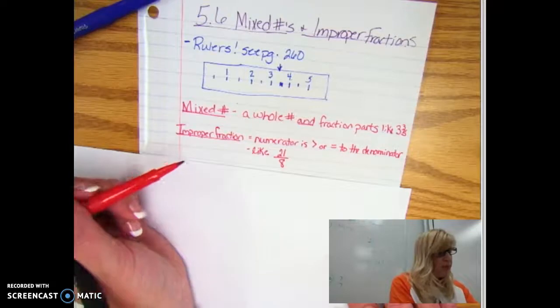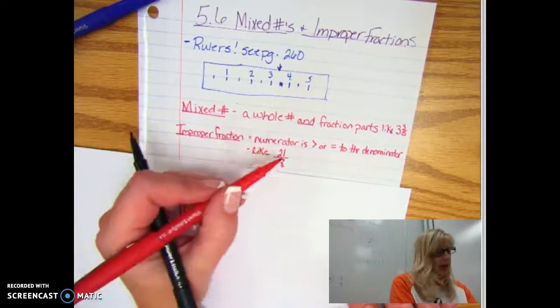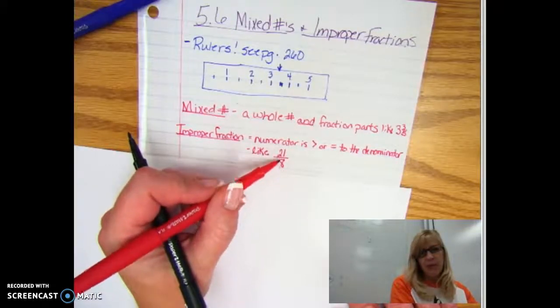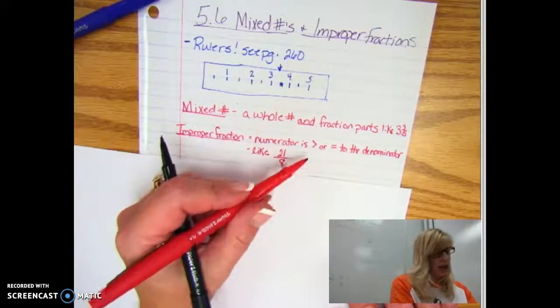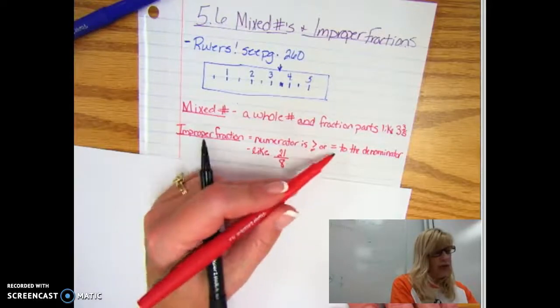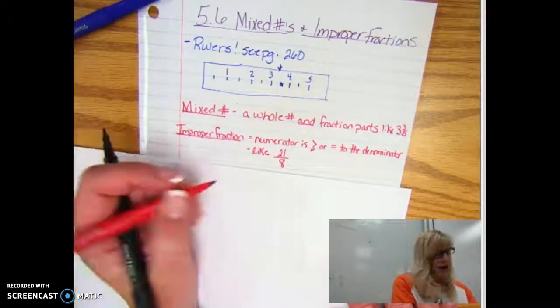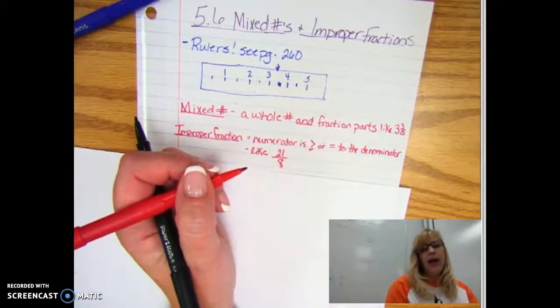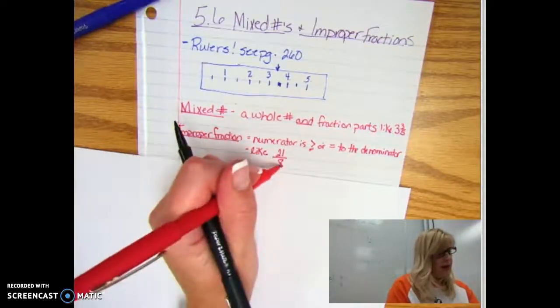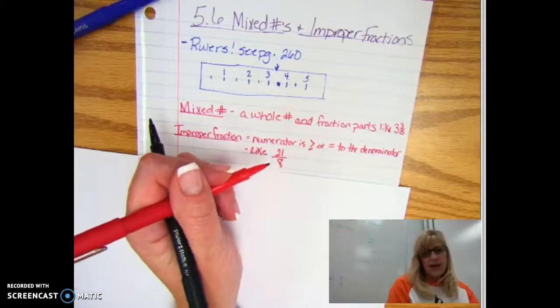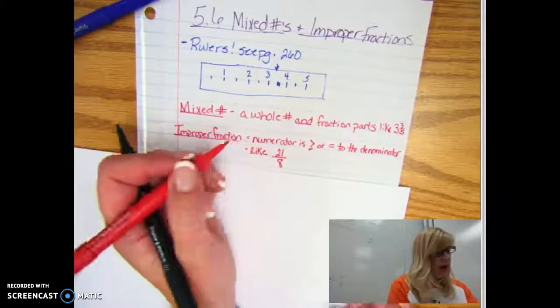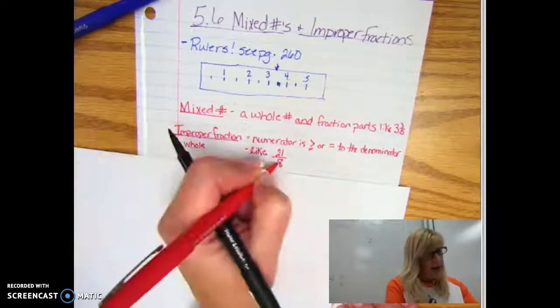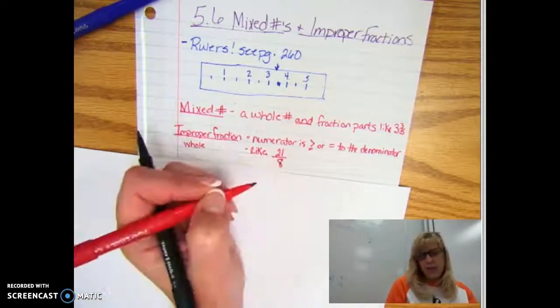An improper fraction is a fraction where the top number is bigger than the bottom number, or the numerator is greater than or equal to the denominator. So I put 21 eighths. If you think of how many wholes that is, and I by whole I'm meaning W-H-O-L-E...